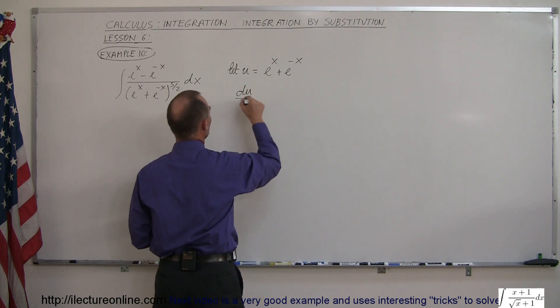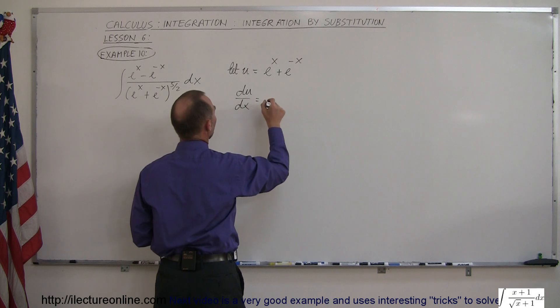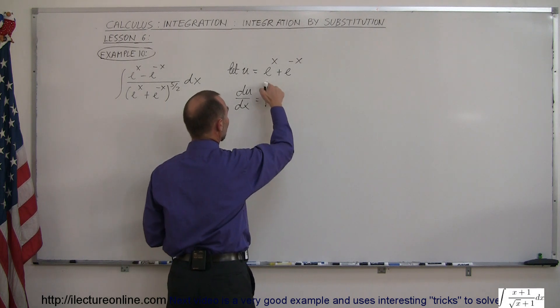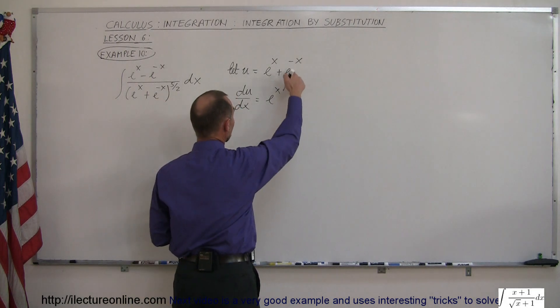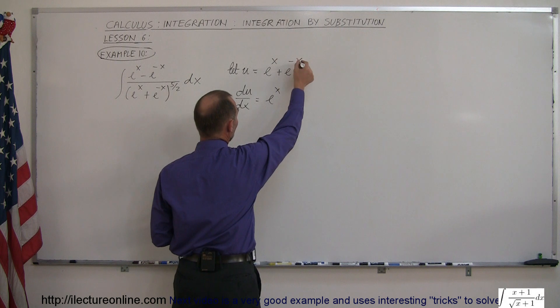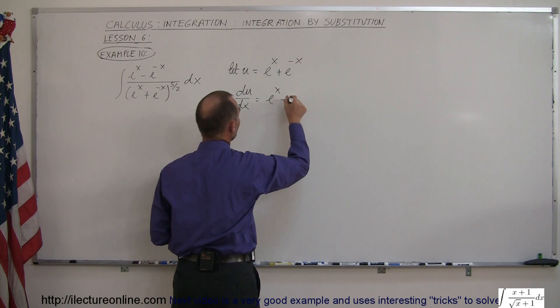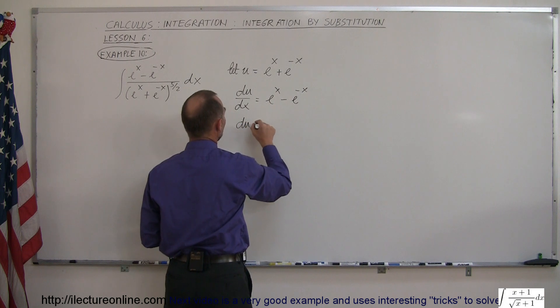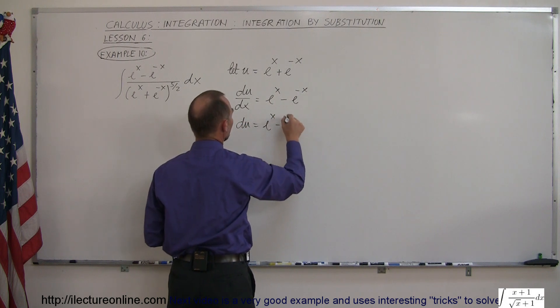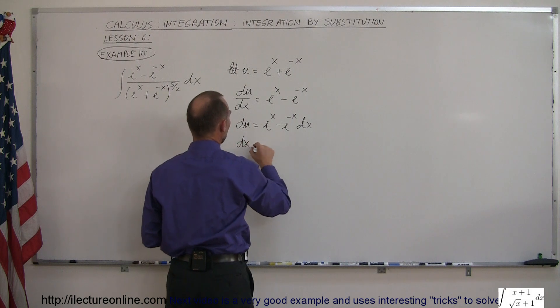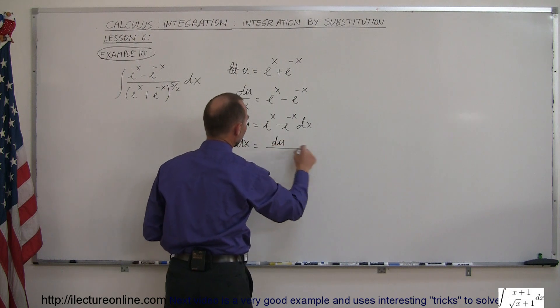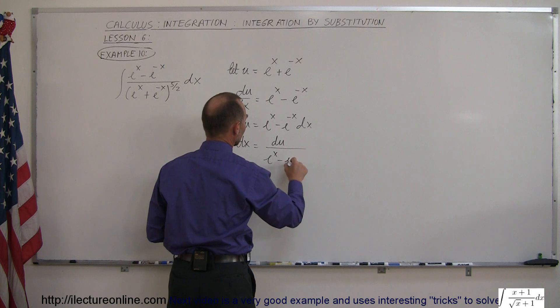Then du/dx will become e to the x because the derivative of e to the x is e to the x and then the derivative of e to the minus x is e to the minus x times the derivative of minus x which is minus 1 which means that it is equal to minus e to the minus x. And then du is equal to e to the x minus e to the minus x dx, or dx can now be written as du divided by e to the x minus e to the minus x.